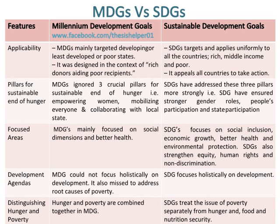Development agendas in MDGs could not focus holistically on development and also missed addressing root causes of poverty. Whereas, development agendas in SDGs focus holistically on development. Additionally, hunger and poverty are combined together in MDGs, whereas SDGs treat the issue of poverty separately from hunger and food and nutrition security.